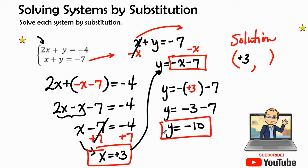Therefore, ladies and gentlemen, y equals a negative 10. So this, the point of intersection where these two lines intersect each other is going to be at the point 3 negative 10.